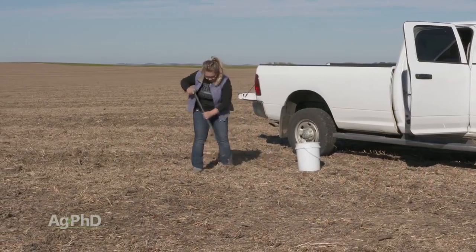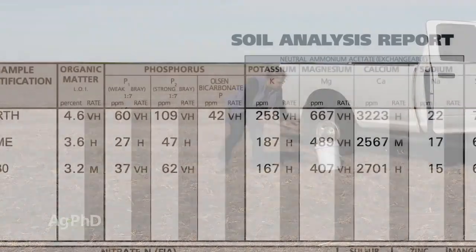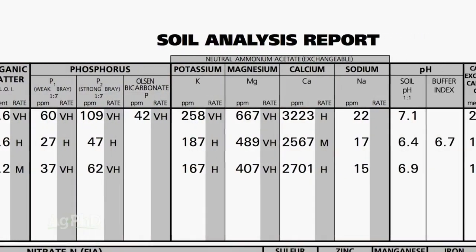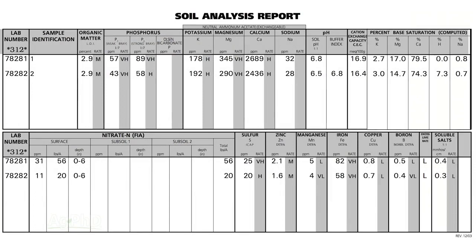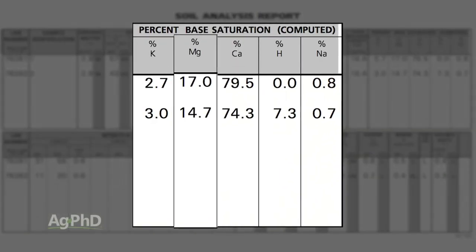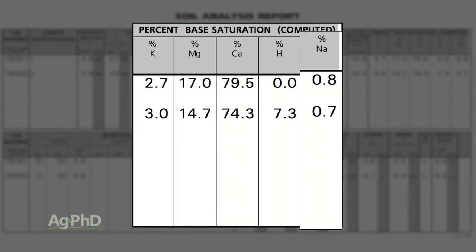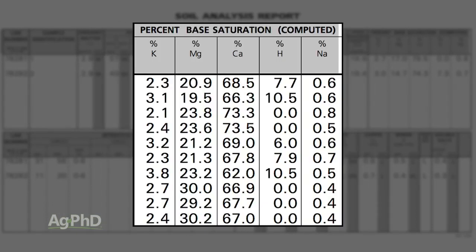One of the things you want to look for on your soil test is your base saturation test. If you don't have a base saturation on the soil test you've been sending in, we'd strongly encourage you to get a complete analysis done with micronutrients and base saturation. With base saturation, there are five nutrients we're looking at: calcium, magnesium, potassium, sodium, and hydrogen. Calcium should occupy 65 to 75 percent of that base saturation test.